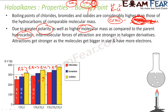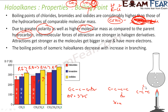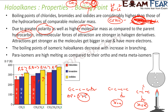The boiling points of isomeric haloalkanes decrease with increase in branching. For example, with 4 carbons and 1 bromine: the straight-chain isomer has a boiling point of about 375 K; with one branch it drops to 360 K; with more branching it drops further to 346 K. So increasing branching decreases the boiling point. Also note that para isomers have a higher melting point compared to ortho and meta because they are symmetrical.